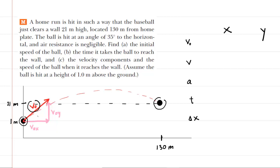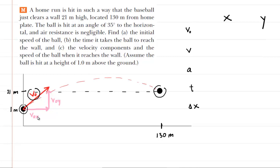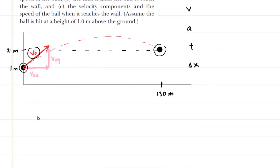We've taken the initial speed vector, shown by the red arrow, and broken it up into the x-component, which points to the right, and the y-component, which points upward. We need expressions for those x and y components. The angle above the horizontal was given as 35 degrees.